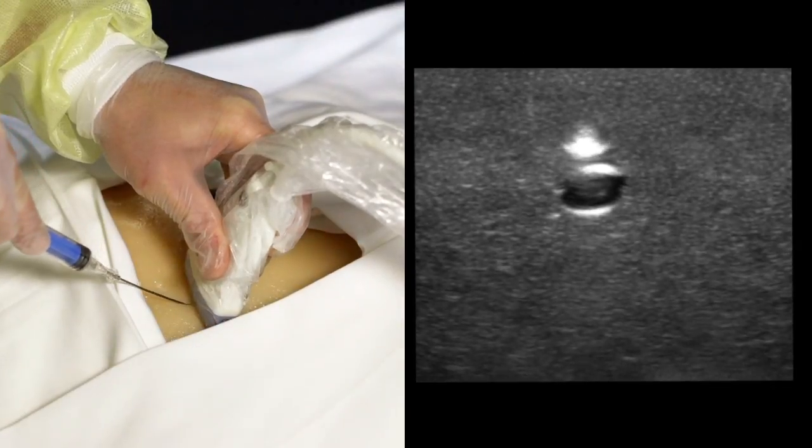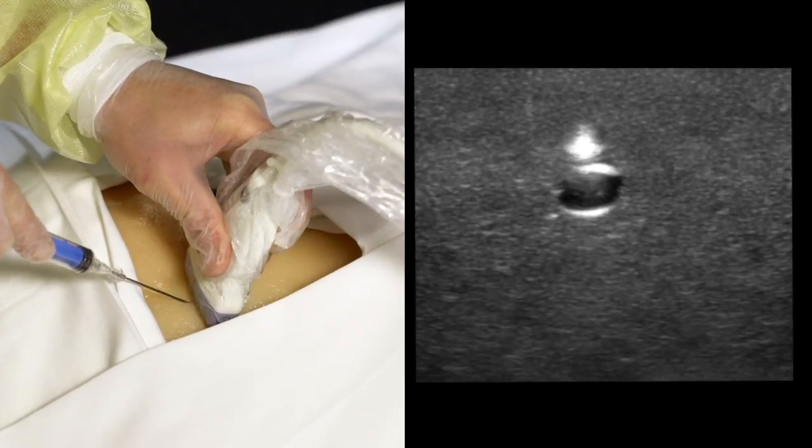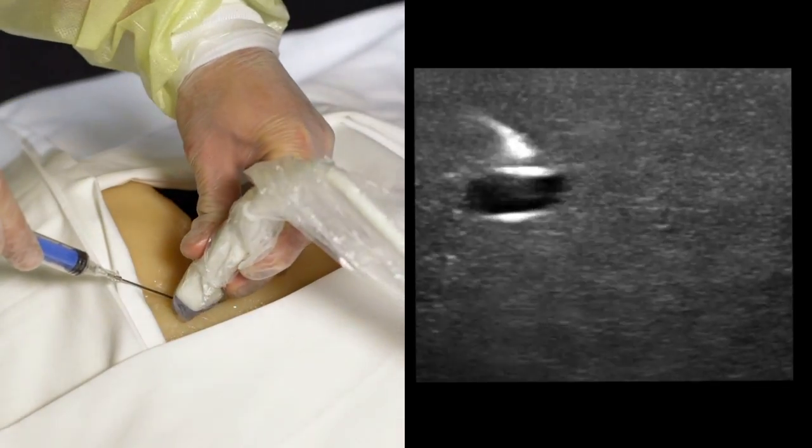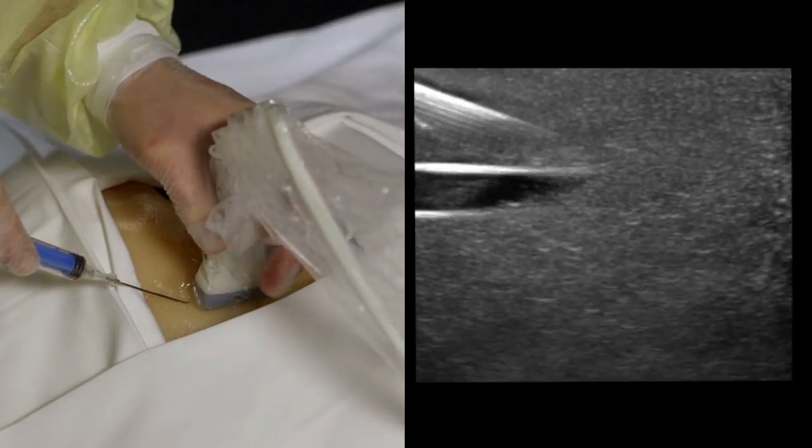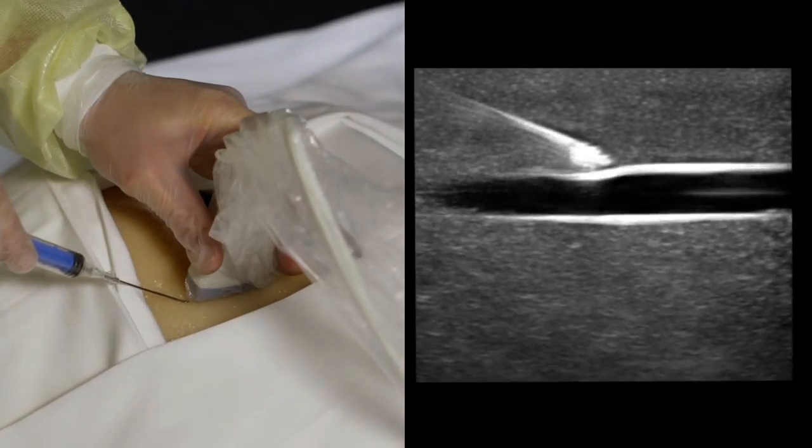Once you have some experience with the transverse view, consider adding in a longitudinal view at this point. When you're satisfied that the needle is directly above the vein, rotate the probe from transverse into the longitudinal view.